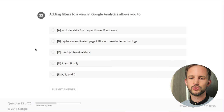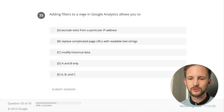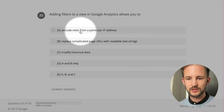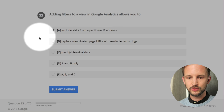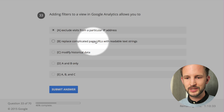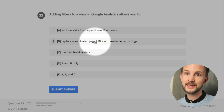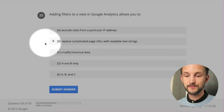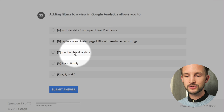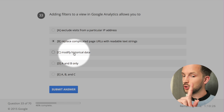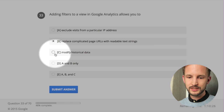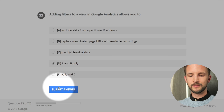Adding filters to a view in Google Analytics allows you to: exclude traffic from a particular IP address - yes, you can do this. Replace complicated URLs with readable text strings - yes, I do that often. Modify historical data - no, no, no, you can't do that. A and B only.